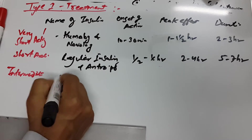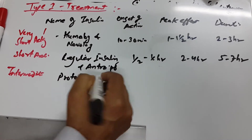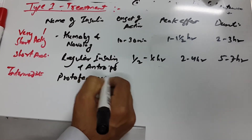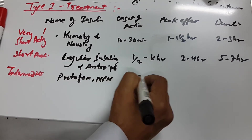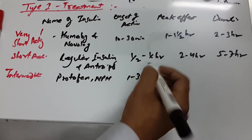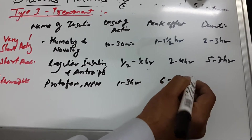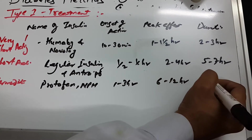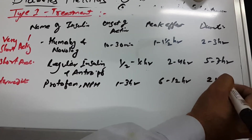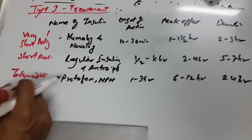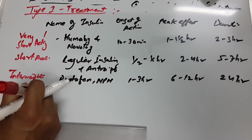The intermediate-acting insulin — most commonly Protophane and NPH — has an onset of one to three hours, a peak effect of six to twelve hours, and a duration of twenty-four hours.